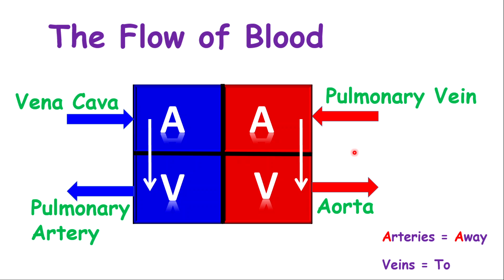Arteries take blood away from the heart — A for away. Veins bring blood back to the heart. The upper chambers receive blood, so the blood vessels carrying blood into the upper chambers are examples of veins. Since blood is coming from the body, that vessel is known as the vena cava, which is the biggest vein in the body.